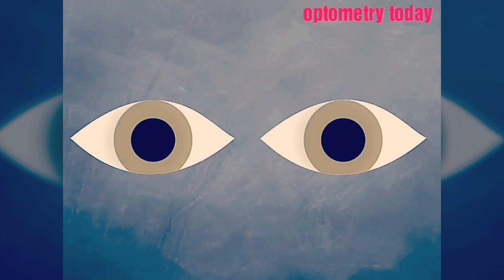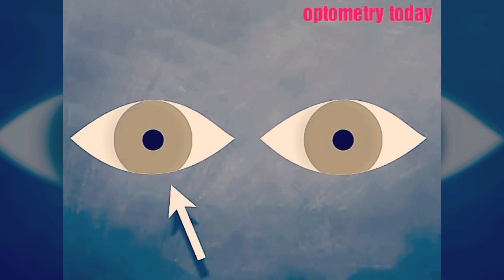Now swing the light from eye to eye, quickly, but pausing on each eye for around 2 seconds. In the normal patient, the pupils will constrict, then relax a little each time the light is swung to them.